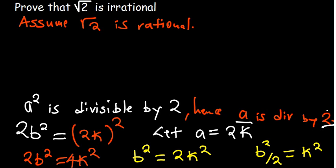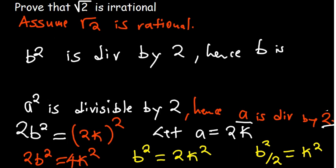So we can say B squared is divisible by 2. Hence our B is also divisible by 2.